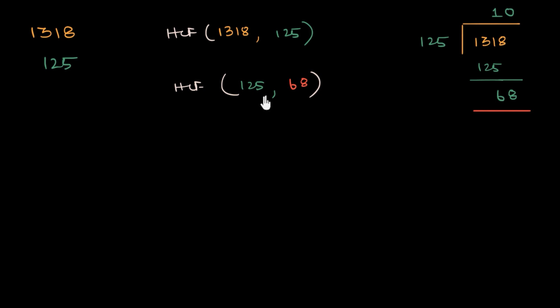Now I have to do this again because it doesn't look like 125 is divisible by 68. For sure, it's not. So let's do this again. Find the HCF. To find the HCF of these two numbers, I'm gonna take the smaller number and the remainder when I divide 125 by 68.